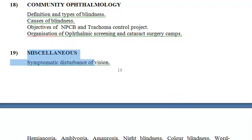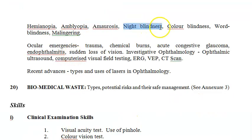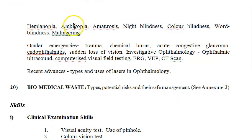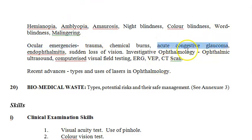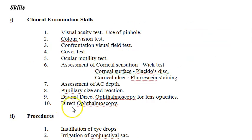Other things you should know include night blindness and color blindness. Then coming to emergencies: trauma, burns, glaucoma — specifically acute congestive glaucoma — all these are emergencies and you should know about them.